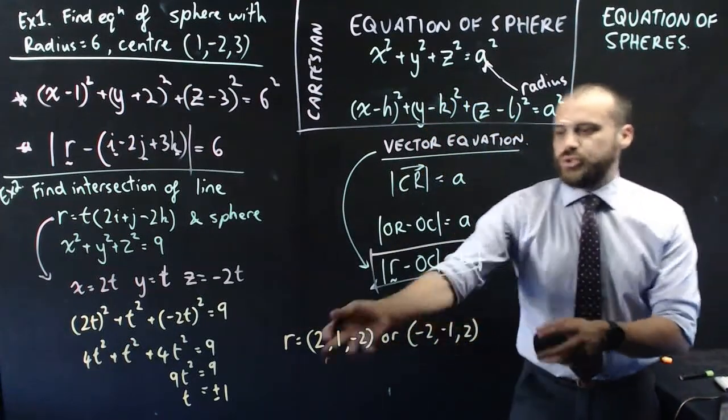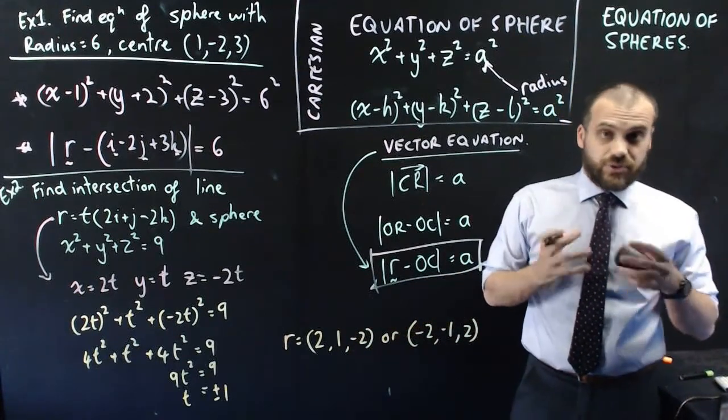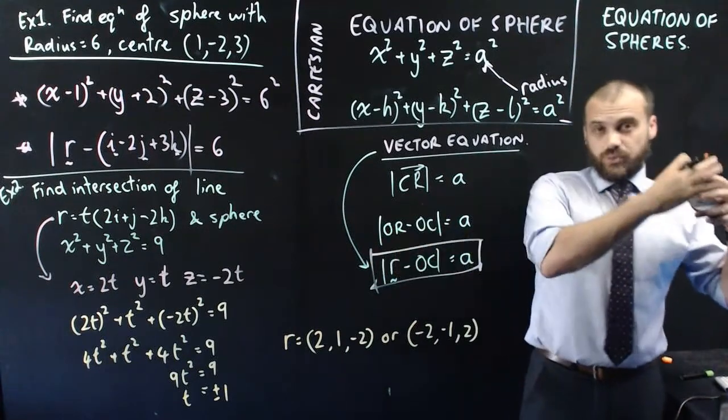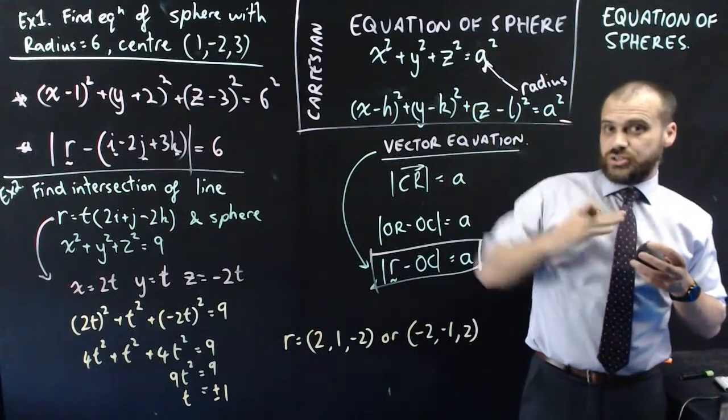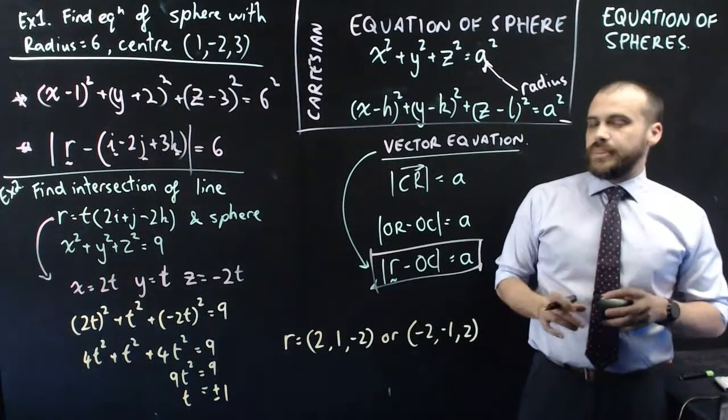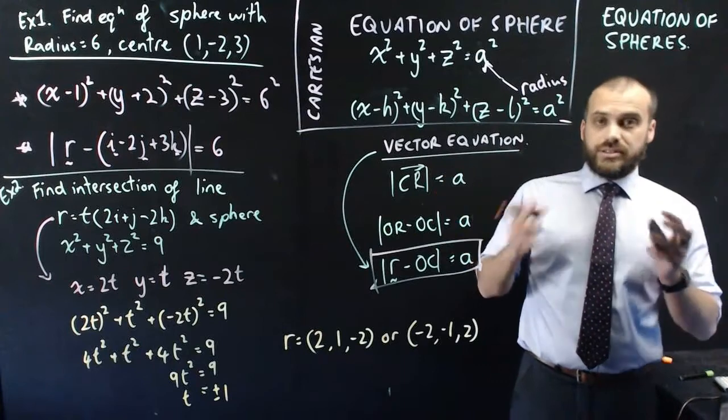Those are my two intersection points. Which, when you think about it, a line passing through a sphere, there are going to be two intersection points as it pops in one end of the sphere and out the other end of the sphere, unless it's creating what's called a tangent to the sphere and it's just touching it, then they're only going to have one intersection point. I've covered a lot there, but that is the equation of spheres.